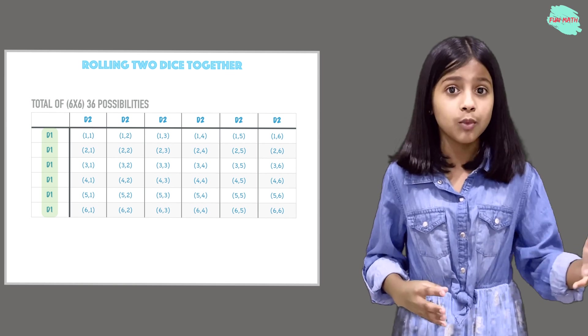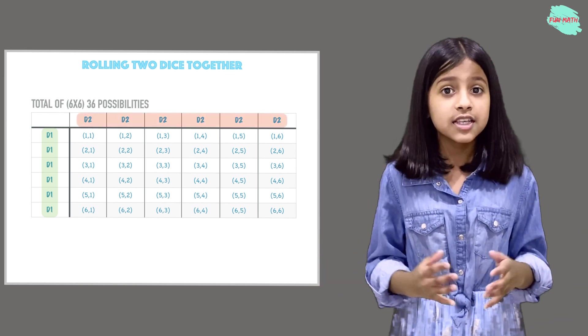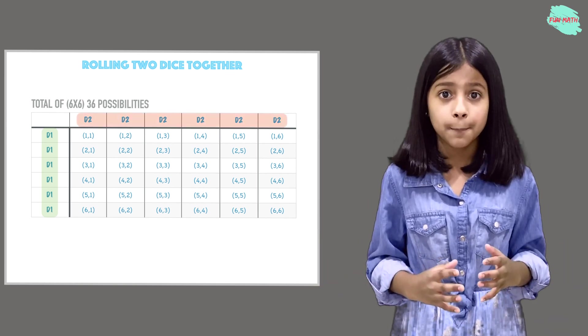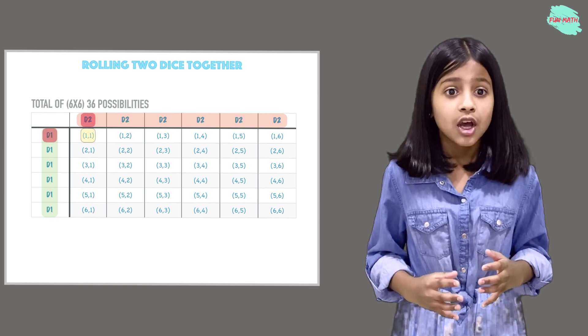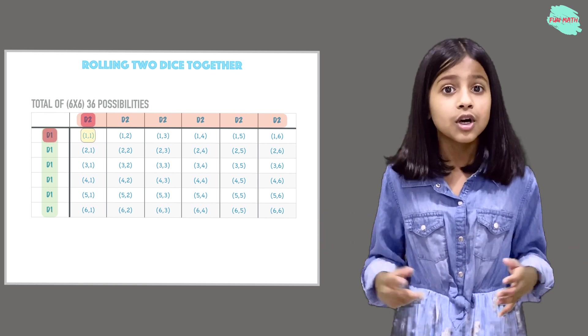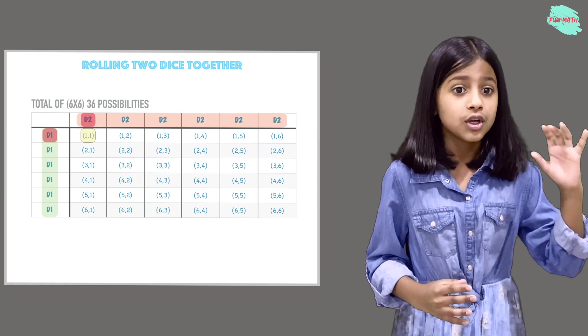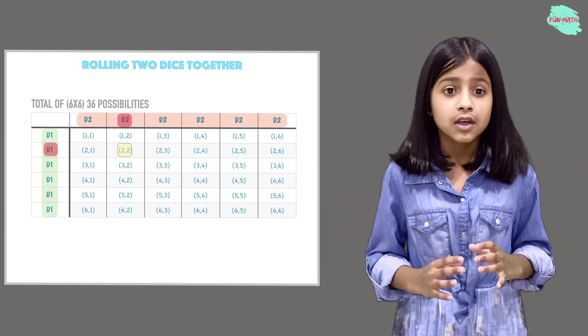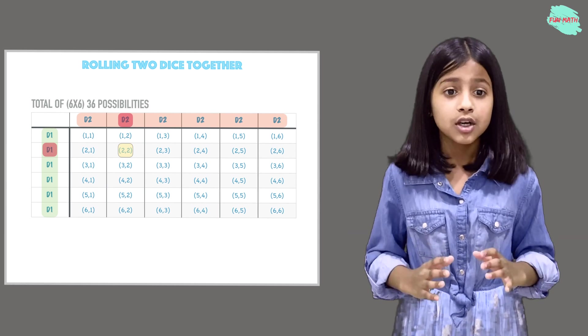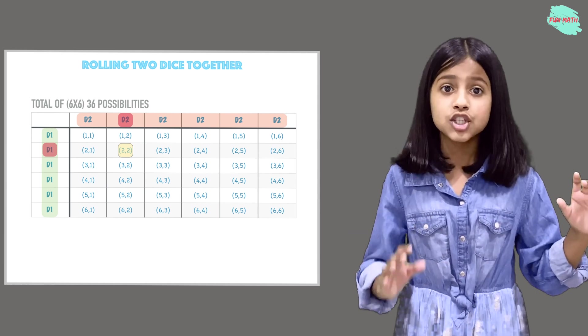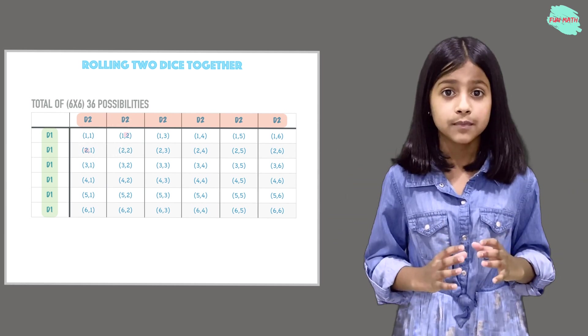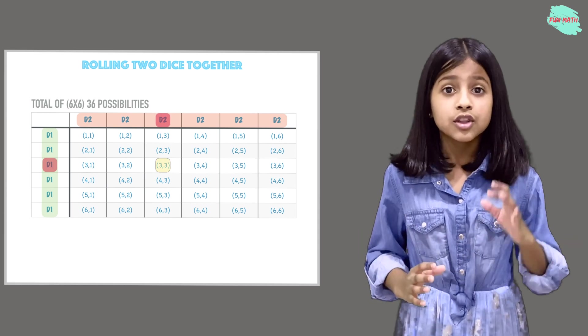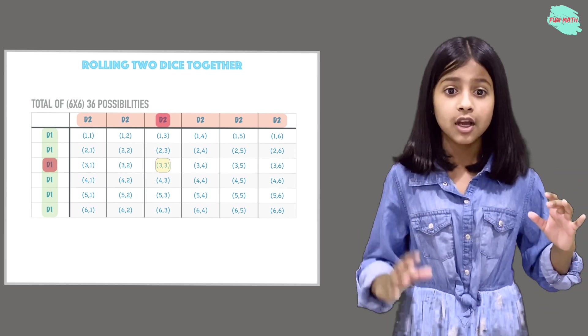When we roll d1 and d2 together, these are some of the possibilities we will get. First possibility is when we roll d1 and d2, we can get 1 on d1 and 1 on d2. Another example is 2 on d1 and 2 on d2. Third, 3 on d1 and 3 on d2.